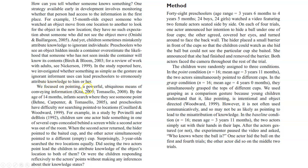'We focused on pointing, a powerful ubiquitous means of conveying information. By the age of 14 months, infants search where they see someone point, and preschoolers have difficulty not searching pointed-to locations.' So infants understand pointing pretty intuitively — just by about a year old they understand that if somebody points they're trying to communicate something. And even if the infant knows you're wrong, they really struggle not to look there because they know that pointing is important and feel compelled to look.